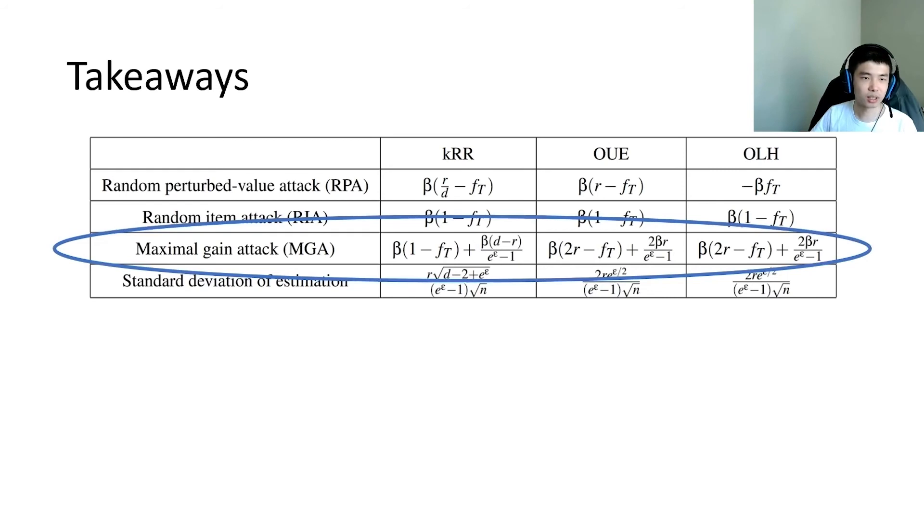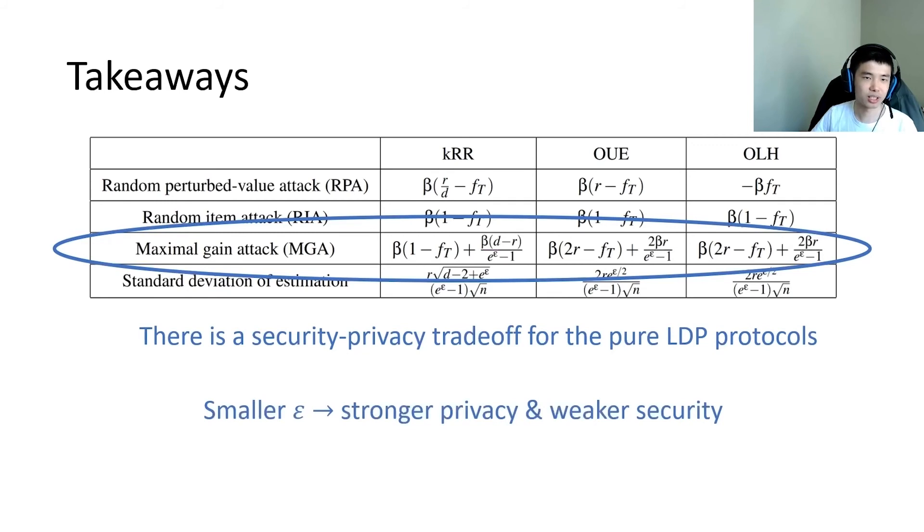Focusing on the overall gain of MGA, we observe that there is a security-privacy trade-off for the pure LDP protocols. Specifically, a smaller privacy budget ε leads to stronger privacy, while also resulting in weaker security.